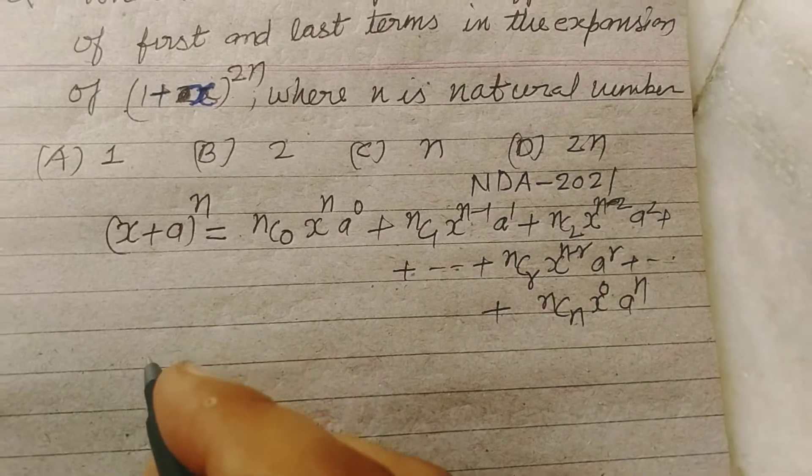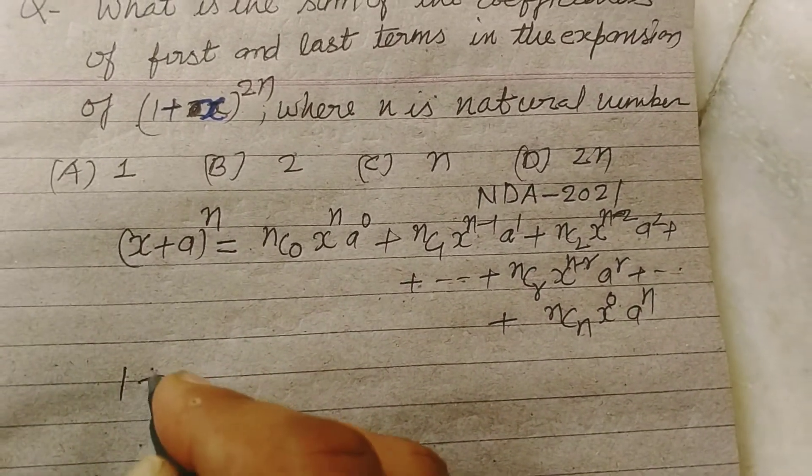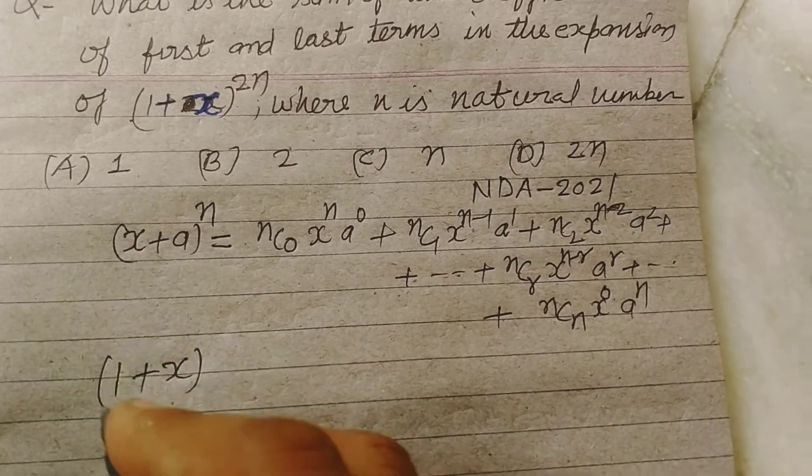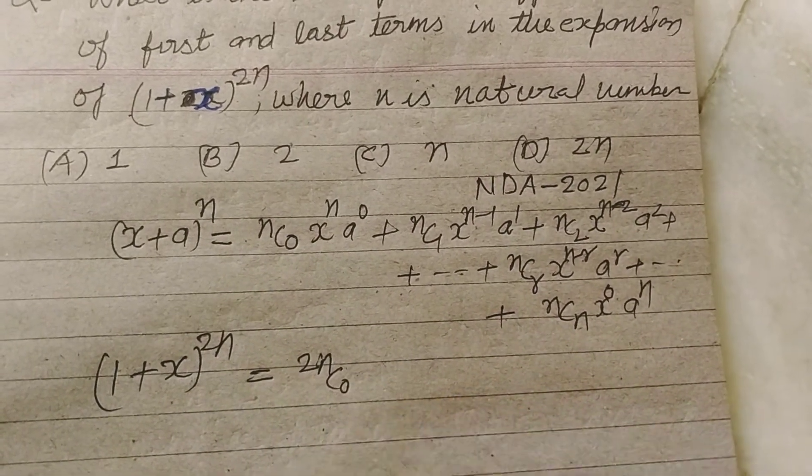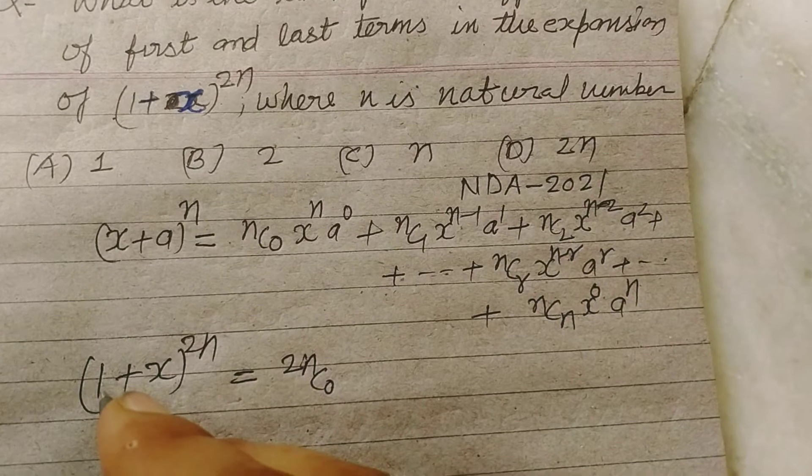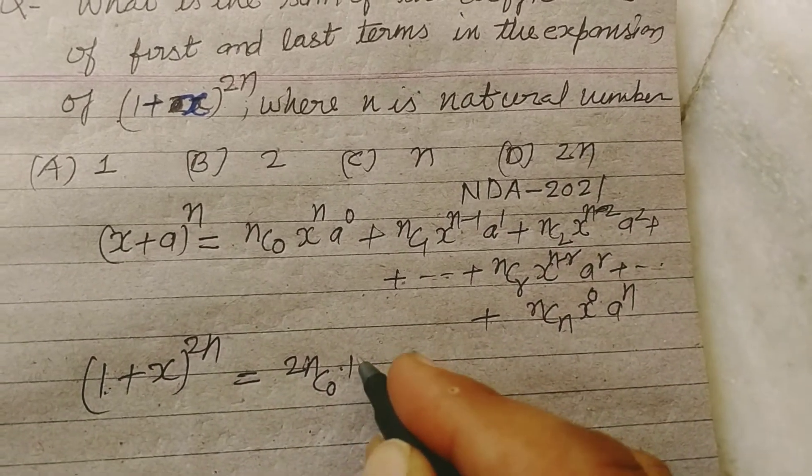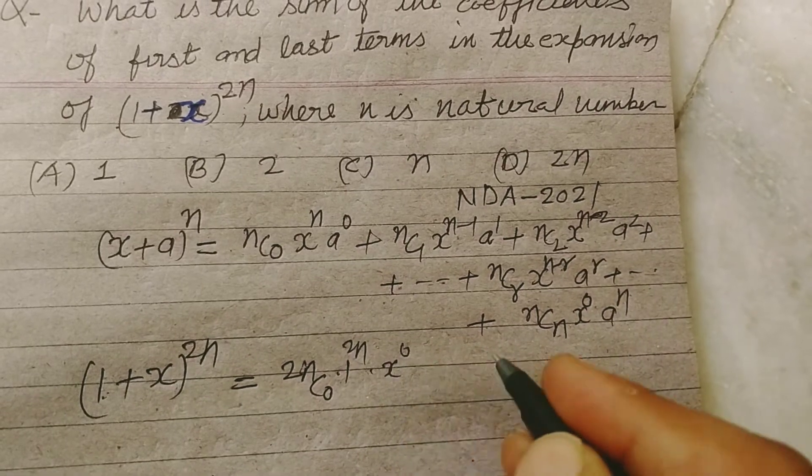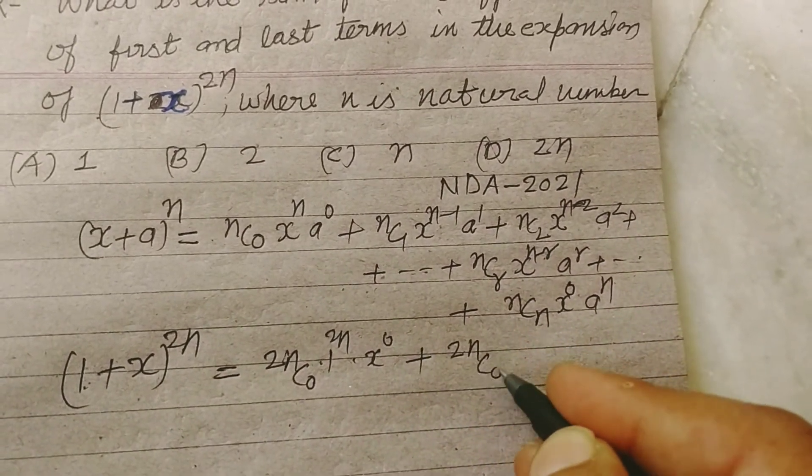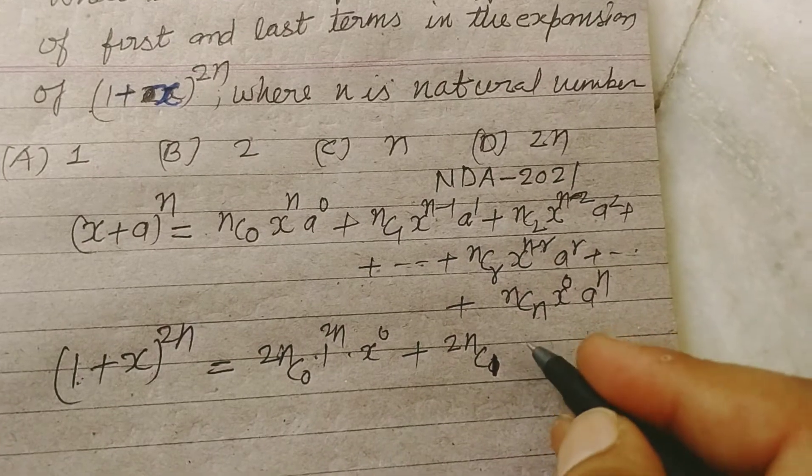we can expand this 1 plus x to the power 2n. Here 2nC0, so here x is 1, so we put 1 to the power 2n into x to the power 0, plus 2nC1,